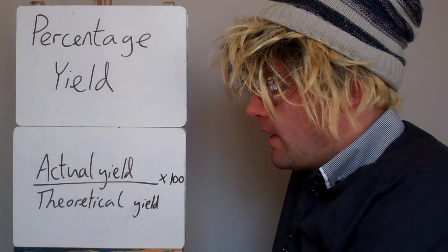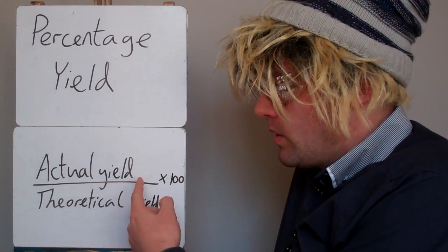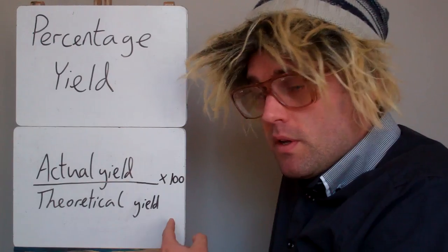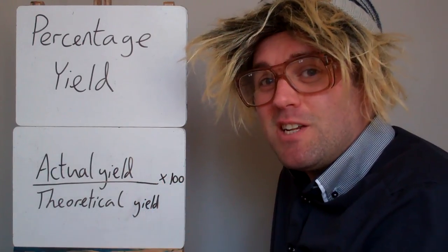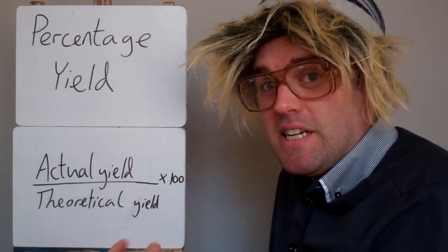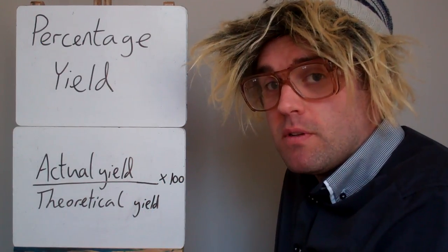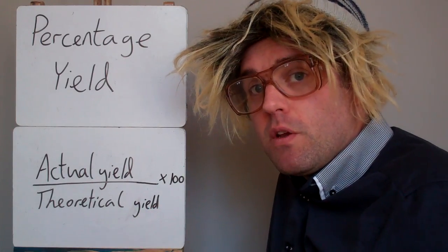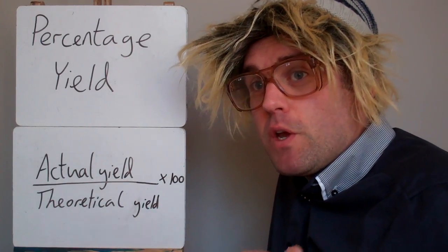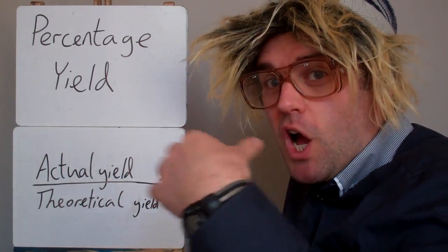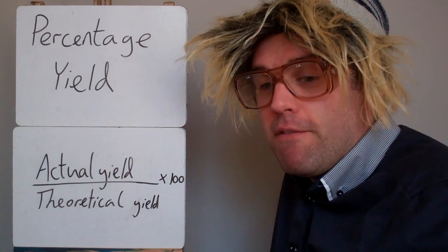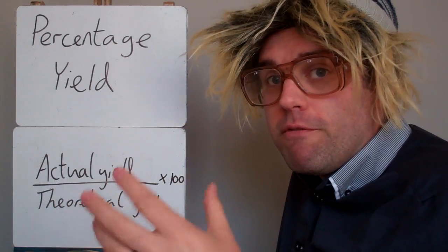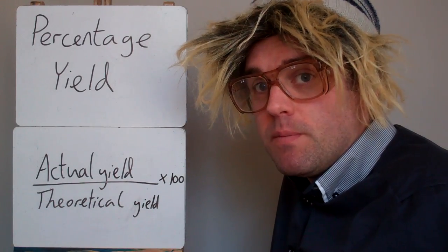The basic equation is the actual yield divided by the theoretical yield. The actual yield is how much is actually made in an experiment. The theoretical yield is how much, in theory, we could have made if the percentage yield was 100% — if all the starting material got converted into the product that we wanted.